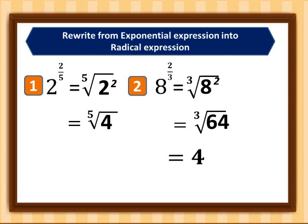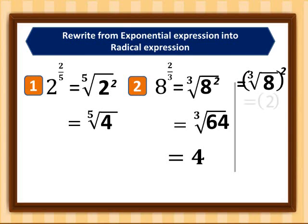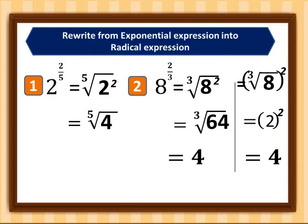I would also like to show another way of writing the exponent in the radicand. We have the cube root of eight — you could simplify the radicand first: cube root of eight equals two, then copy the exponent two, so two squared equals four. You get the same answer regardless of which process you use.